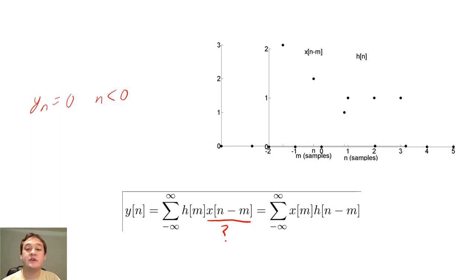When n is 0, the sample of x of n minus 1 is multiplied by the 1 sample of h of m. So y of 0 will be 1.